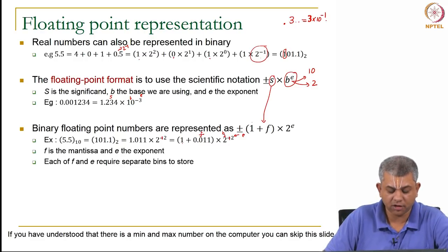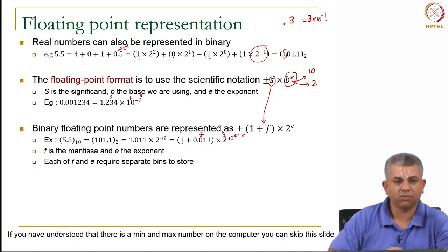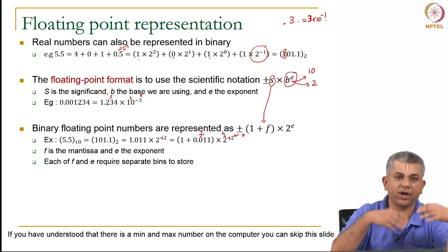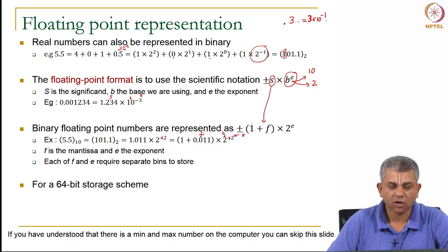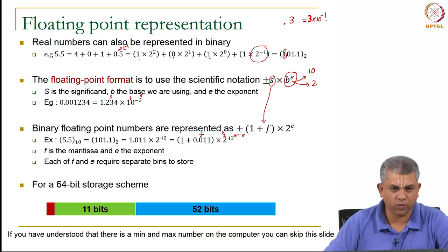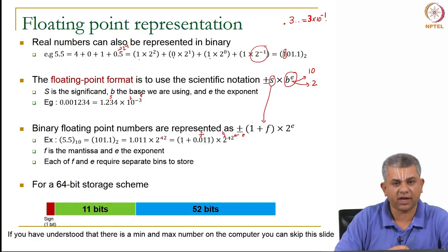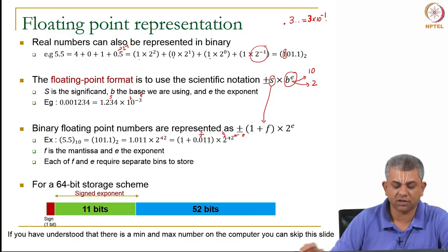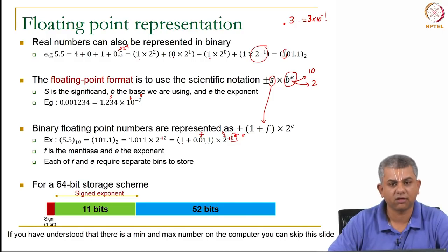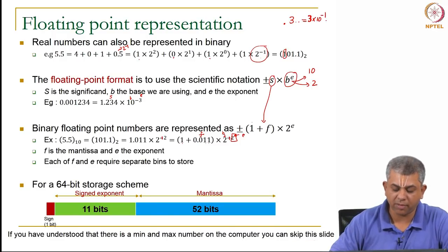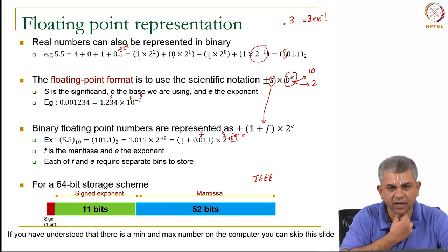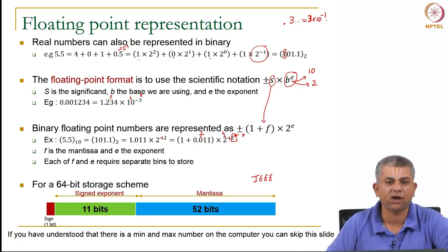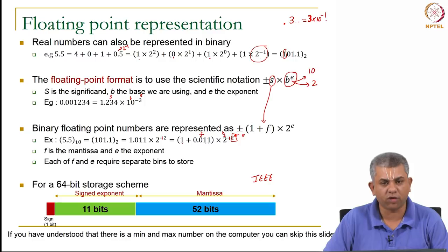F is called the mantissa and E is the exponent. Both need separate storage bins. For 64-bit double precision storage — the IEEE standard — we keep 1 bit for the sign, 11 bits for the signed exponent E, and 52 bits for the mantissa F. This is the standardized way of storing floating point numbers in 64 bits that people have agreed upon.